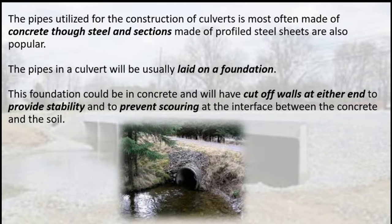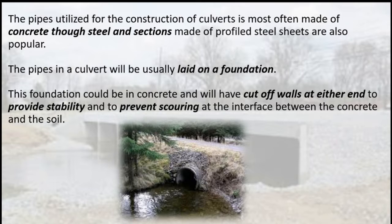The pipes utilized for the construction of culverts are most often made of concrete, though steel and sections made of profiled steel sheets are also popular. The pipes in a culvert will usually be laid on a foundation. This foundation could be in concrete and will have cut-off walls at either end to provide stability and to prevent scouring at the interface between the concrete and the soil.